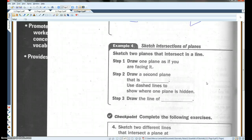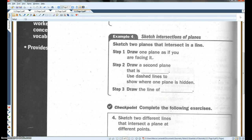All right. Example four. Sketch two planes that intersect in a line. All right. Now, I don't expect you guys to be artists. If it doesn't look great, don't worry about it. This is one way you could draw this. Draw one plane as if you are facing it. So, I'm just going to draw a regular old rectangle. Okay. Draw a second plane that is horizontal. Or as horizontal as I can make it. Let's see here.